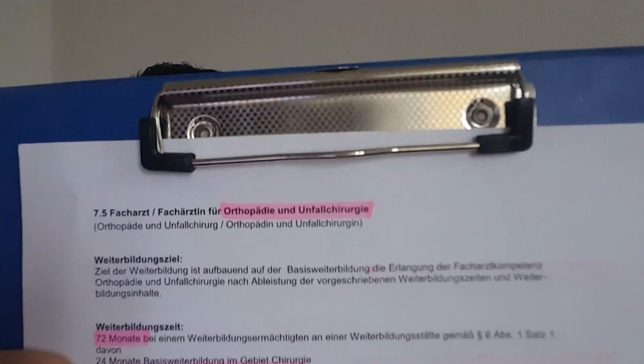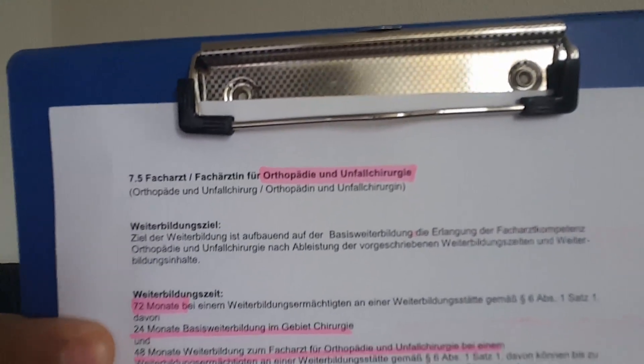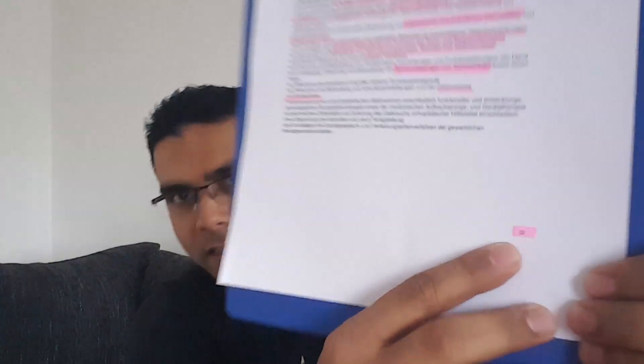I will show you this paper — I am going to post a link in the comment section of this video. As you know, everything here is in German. Here you can see it says Facharzt für Orthopädie und Unfallchirurgie. Facharzt means a specialist doctor, and Assistenzarzt is assistant doctor, that is a resident.